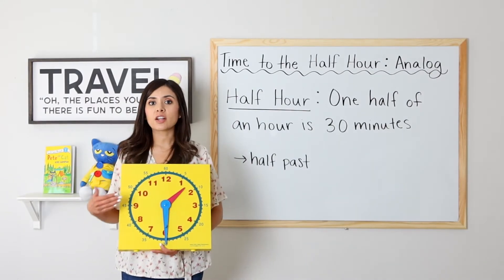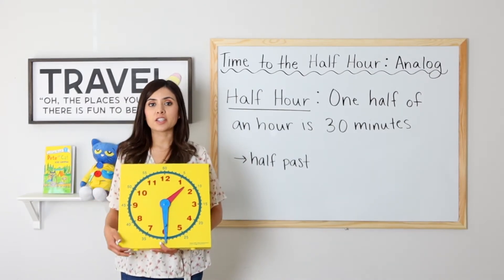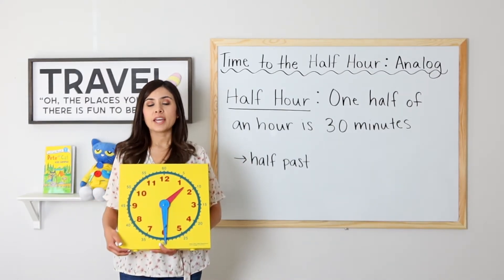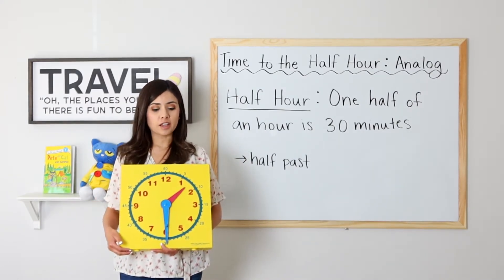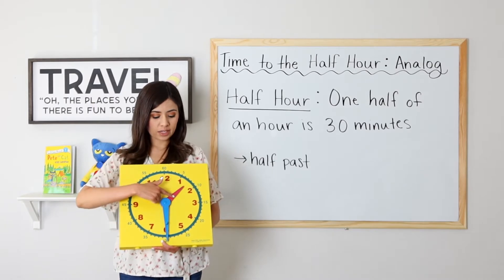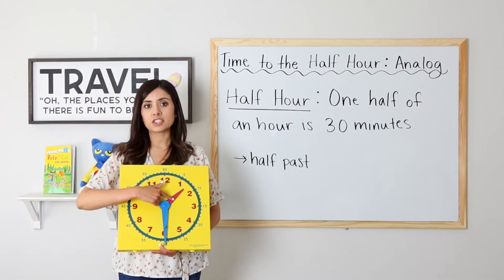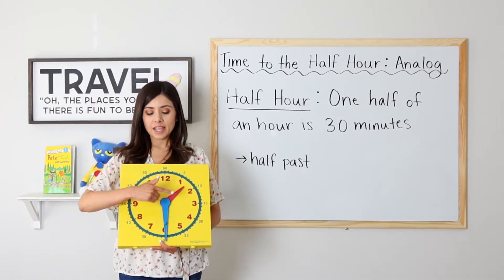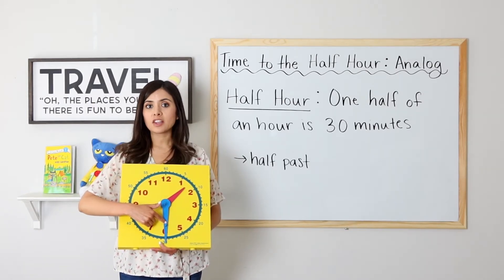Let's go ahead and take a look at our analog clock. An analog clock has an hour hand — that's the short hand — and a minute hand, the long hand.